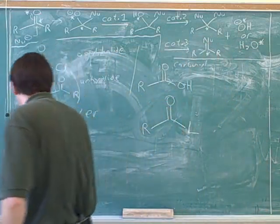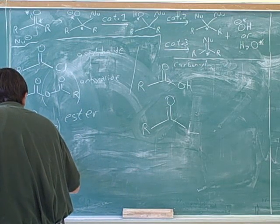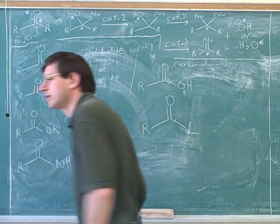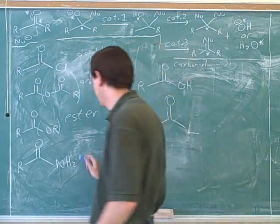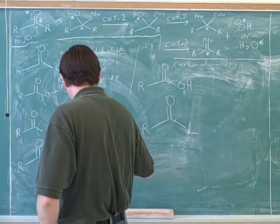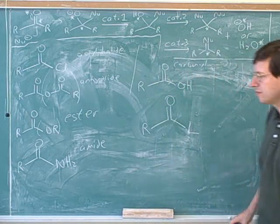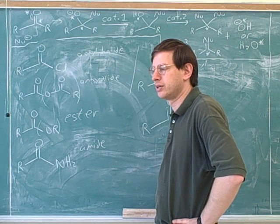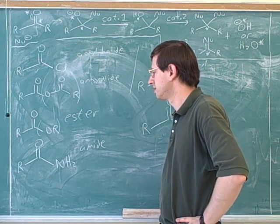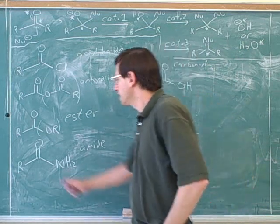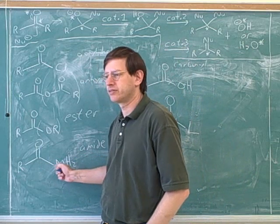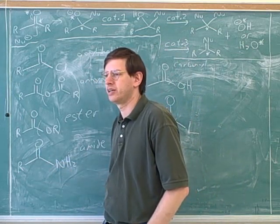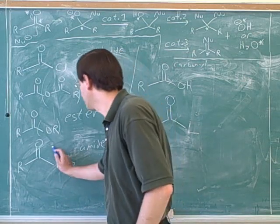There's only one more type of carboxylic acid derivative. This is what's called an amide. Or a carboxylic amide. A carbonyl connected to a nitrogen. Carbonyl connected to the nitrogen. So who's the L group here? NH2. Yeah. The NH2 is the L group.